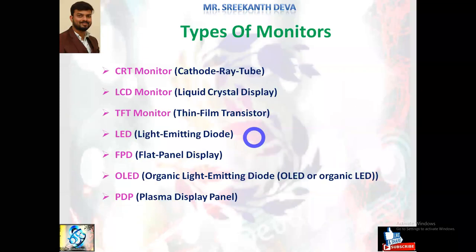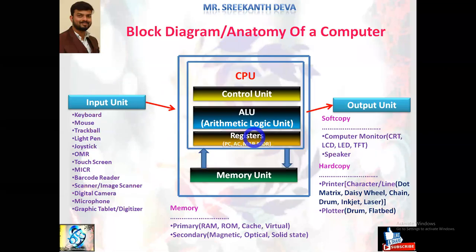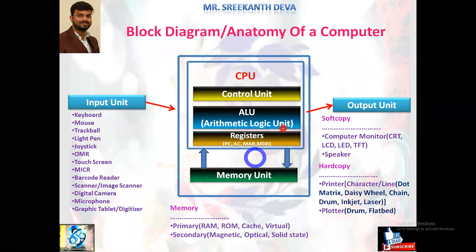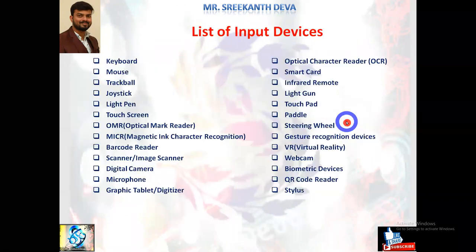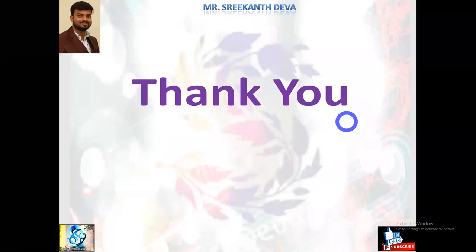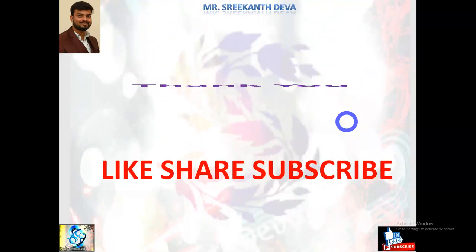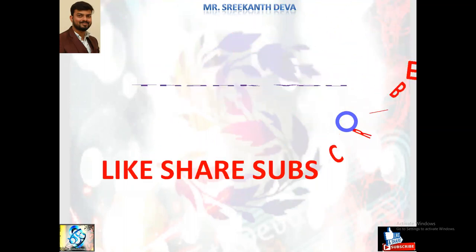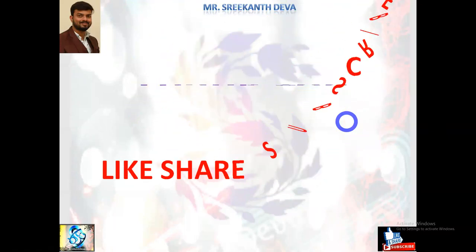In this session we discussed in detail the architecture and block diagram or anatomy of a computer — with detailed explanation of input units, CPU, memory unit, and output unit: how data flows from the input unit to the processor, how the processor interacts internally with memory units, ALU, control unit, and registers, and after processing how data moves to the output units. I hope everyone understood the block diagram and anatomy of a computer. If you like my videos, please like and subscribe for more updates on computer fundamentals and programming in C.